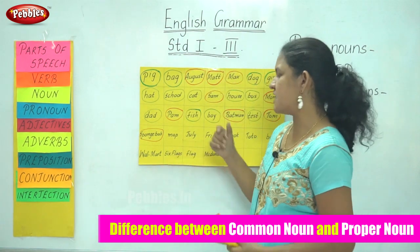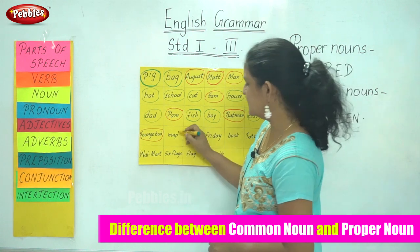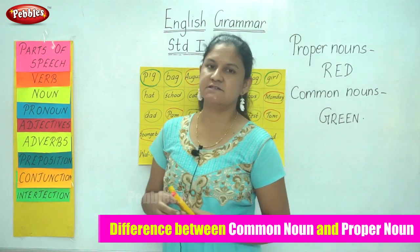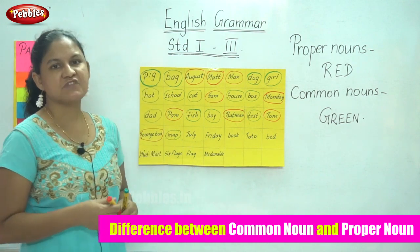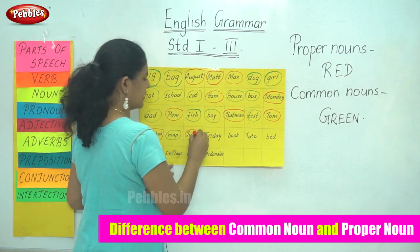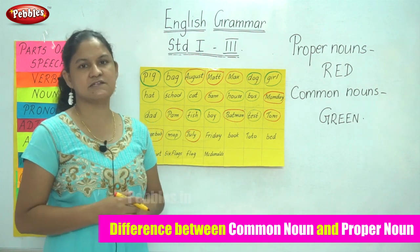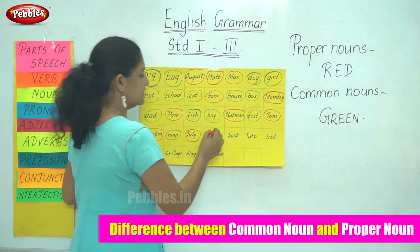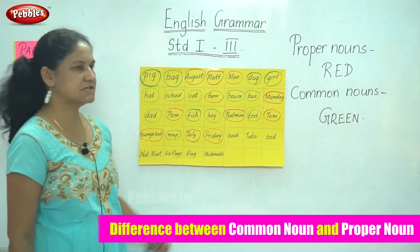Next I have map. Map is a common noun, so it is circled in green. July is the name of a month in the year, it starts with a capital letter, and is known as a proper noun, so I circle it in red. Friday is a day of the week, it starts with a capital letter, and so it is a proper noun. So I circle the word Friday in red.